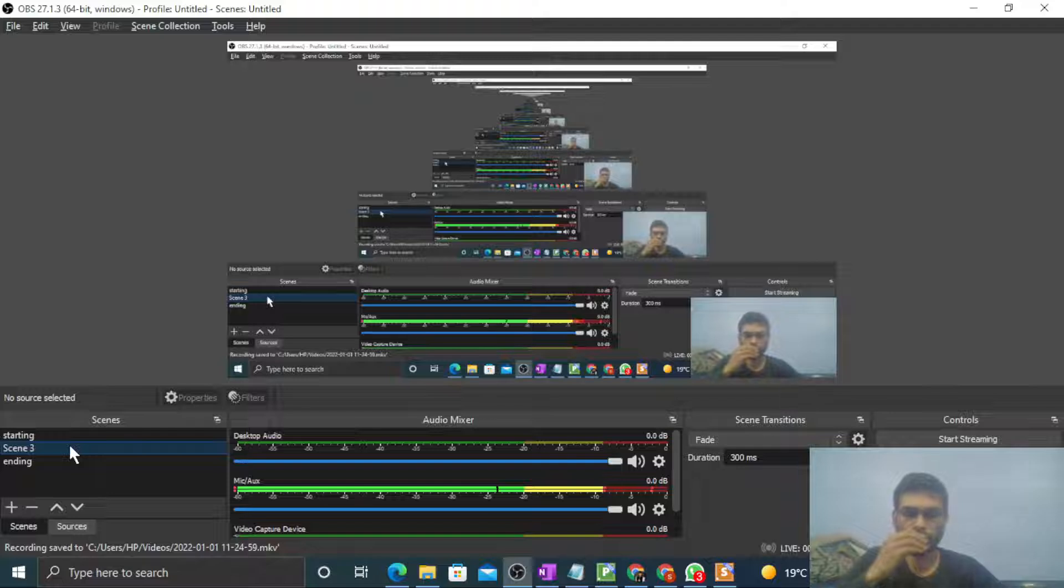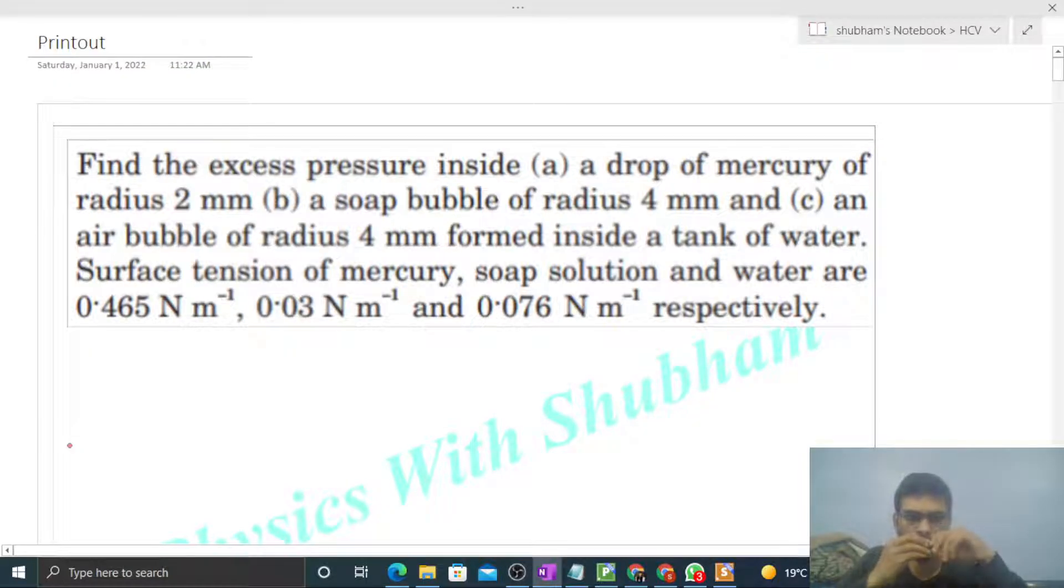Okay, hi everyone. So today let's discuss one interesting problem. It says find the excess pressure inside a drop of mercury of radius 2 mm, a soap bubble of radius 4 mm, and an air bubble of radius 4 mm formed inside a tank of water. Surface tension of mercury, soap solution, and water are given respectively.